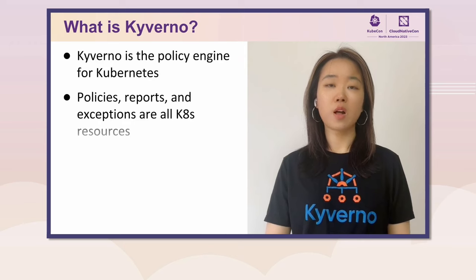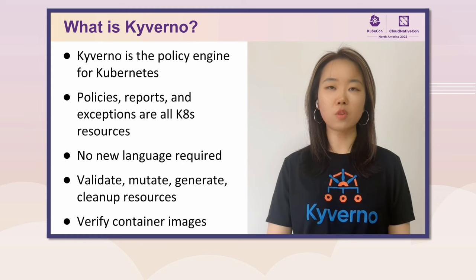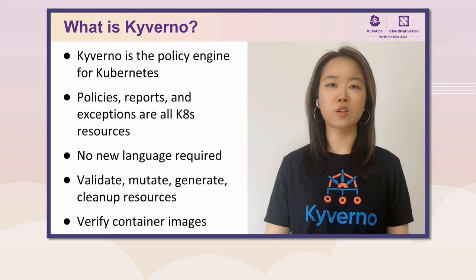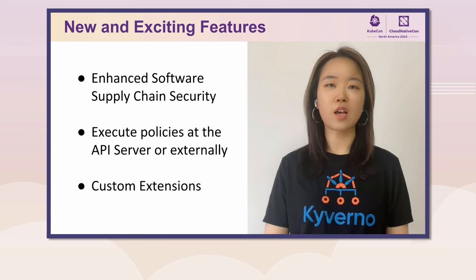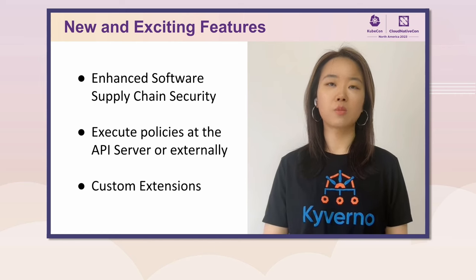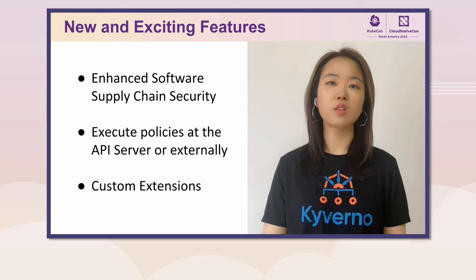Hello everyone, my name is Sheneng Zhao. I'm a Kyverno maintainer and a staff engineer at Nirmata. I'm here to give you an update on Kyverno. Kyverno is a policy engine built for Kubernetes. With Kyverno, all managed resources are native to Kubernetes and there's no new language to learn. Using policy as code, Kyverno enables collaboration across developers, operators, and security roles. In the past year, Kyverno has quickly grown to over 2 billion downloads and over 4,300 GitHub stars, with adoption from T-Systems, Deutsche Telekom, Wayfair, Yahoo, and several others.